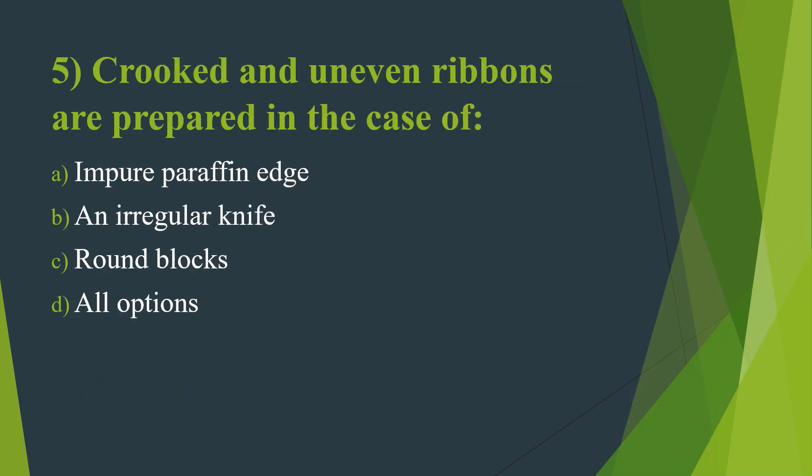Fifth question: Crooked and uneven ribbons are prepared in the case of — that is twisted uneven ribbons during sectioning. Options: Option A: Impure paraffin. Option B: Irregular knife. Option C: Round blocks. Option D: All options. Here the answer is Option D — All options. Impure paraffin, irregular knife, and round blocks all cause ribbon formation issues.